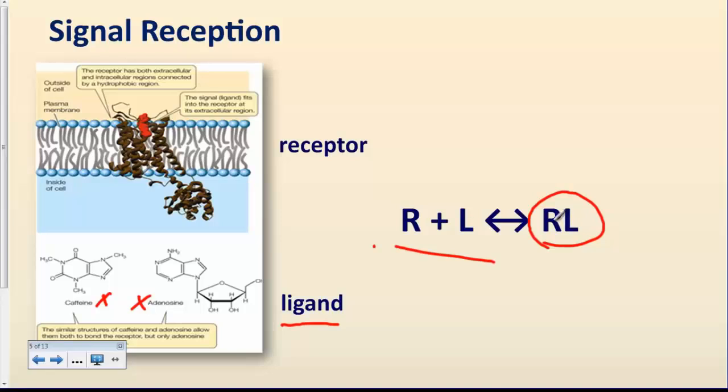And so now, these are two molecules that are now interacting with each other. But this interaction is reversible. And the direction of the reaction would happen based on how much you have of each of the receptor or the ligand.